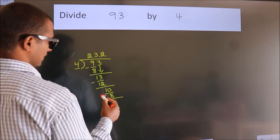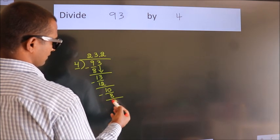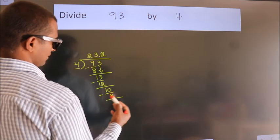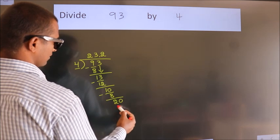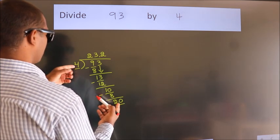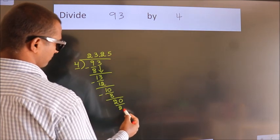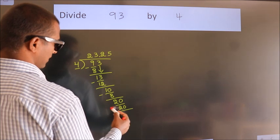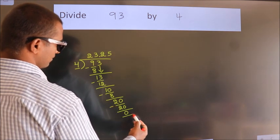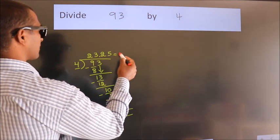Now we subtract. We get 2. After this, we already have the decimal. So directly take 0. So 20. When do we get 20 in the 4 table? 4 fives, 20. Now we subtract. We get 0. We got remainder 0. So this is our quotient.